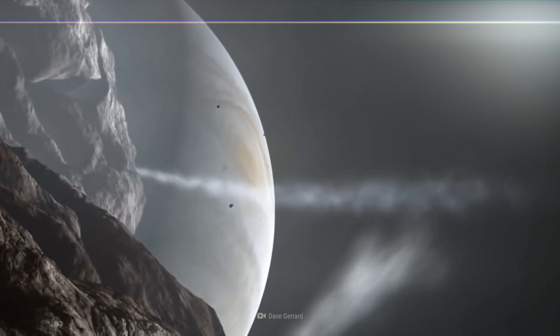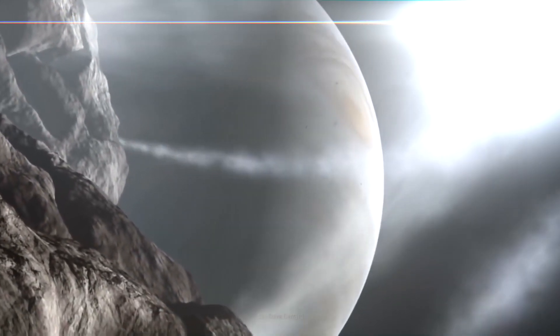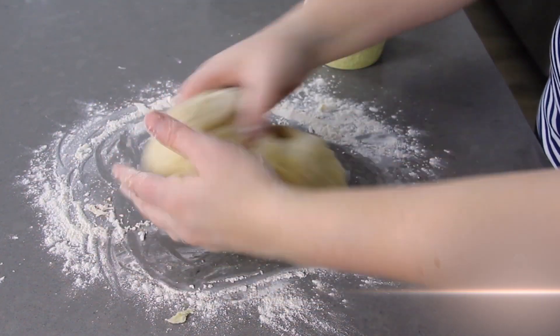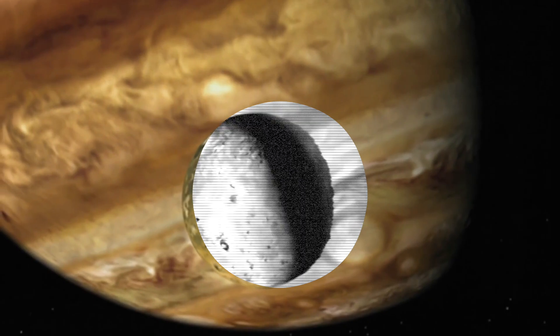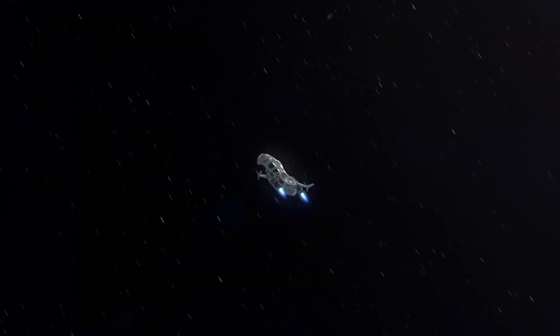So strong that Jupiter's gravity slightly deforms the shape of Io itself, kneading it like a lump of dough. The constant stretching and squeezing from Jupiter's tides causes an immense amount of friction inside Io's core. This friction generates enough heat to power Io's many volcanoes.